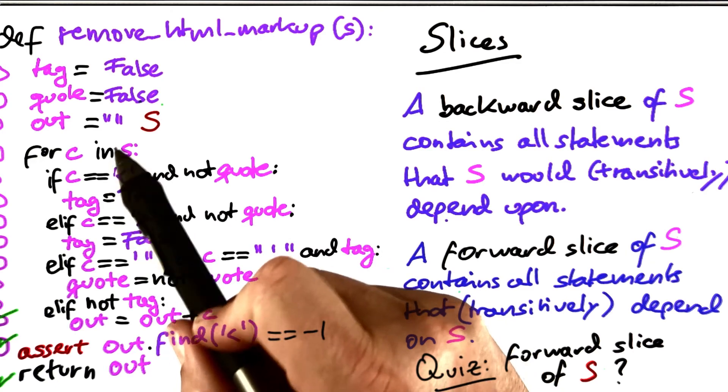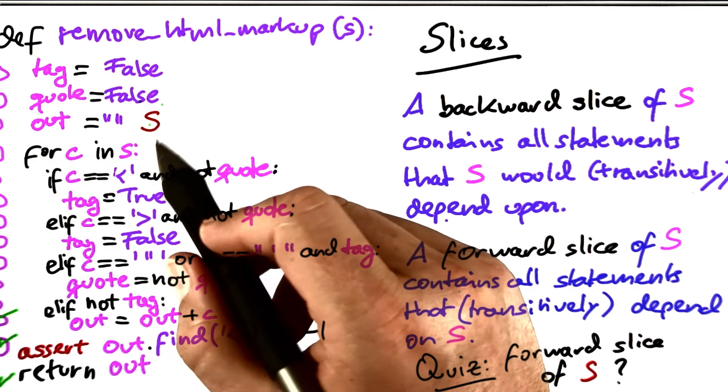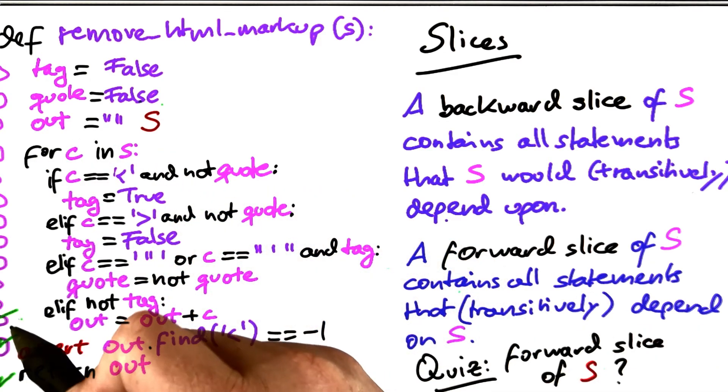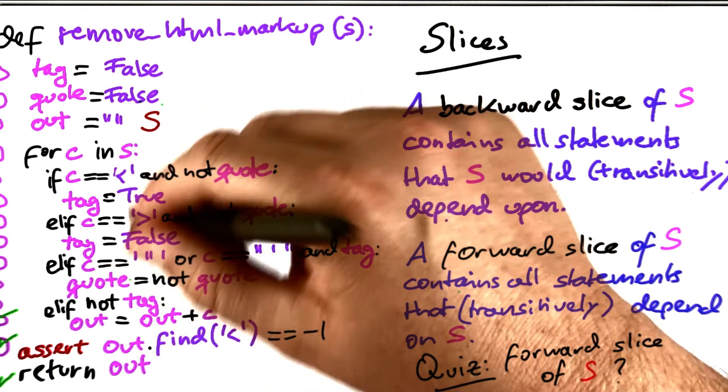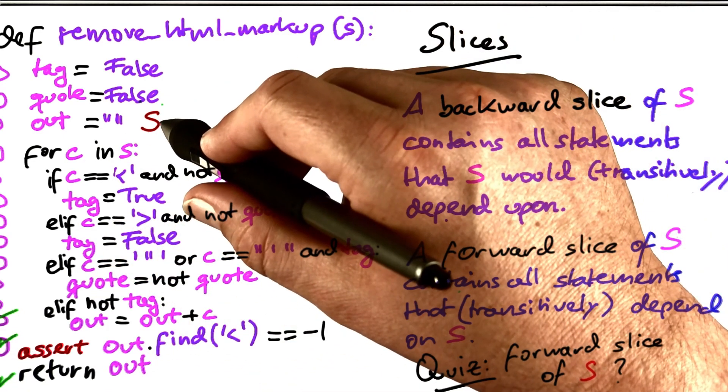So if you want to know how this setting affects things downstream, the forward slice will tell you, well, it can only affect these three lines down here. Anything else in between will not be affected by the value of out.